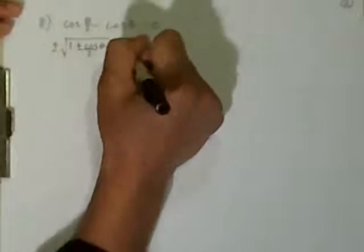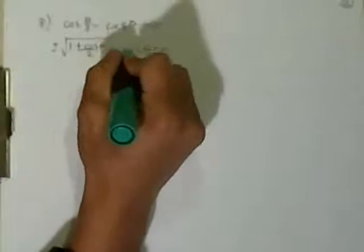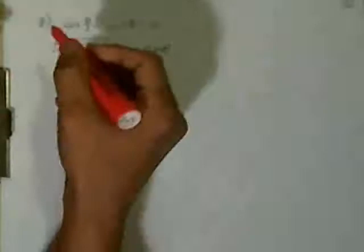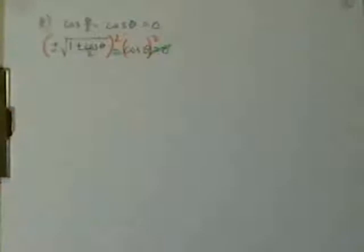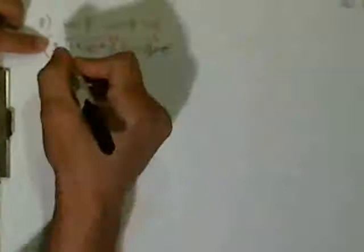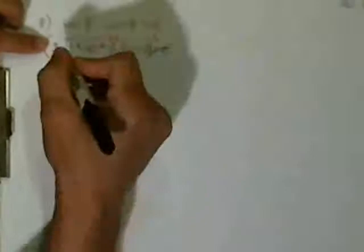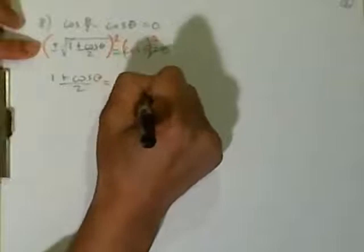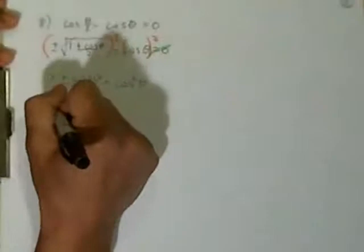We move cosine theta over to the right side. Now we have the square root on the left, so we square both sides. When we square the left side, the square root cancels, and the plus-or-minus goes away because any number squared is positive. That gives us (1 plus cosine theta) divided by 2 equals cosine squared theta. We multiply both sides by 2: 1 plus cosine theta equals 2 cosine squared theta.